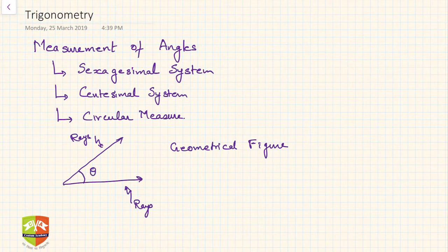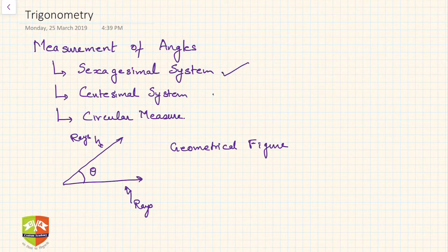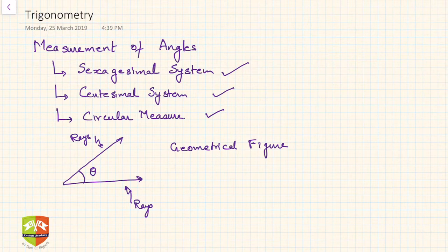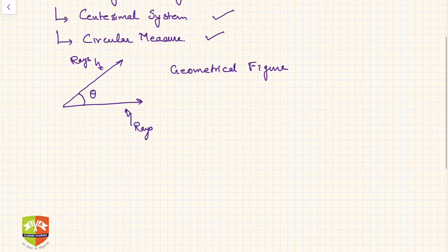An angle is usually denoted by the Greek letter theta. Now, how do we measure angles? There are three systems of measurement: one is called the sexagesimal system, another is called the centesimal system — which is not much in use these days — and the most prominent one is circular measure. Let us understand each of them one by one.